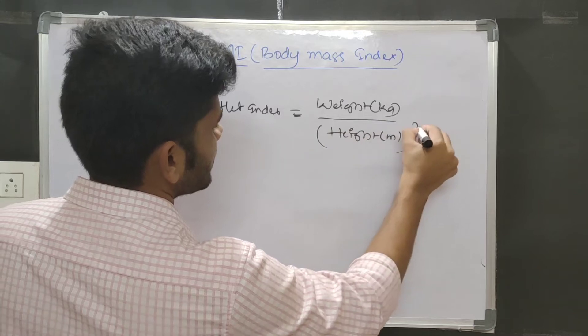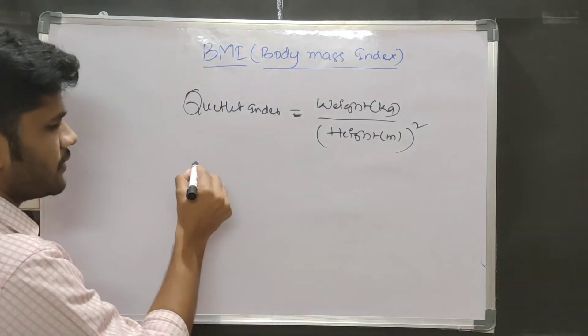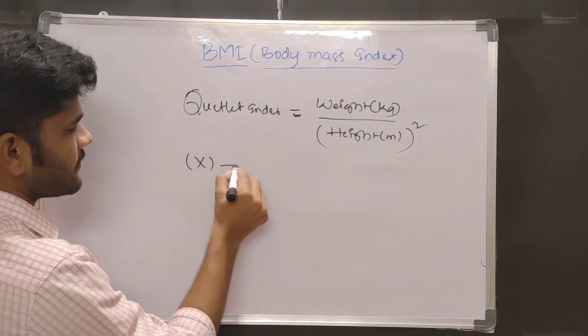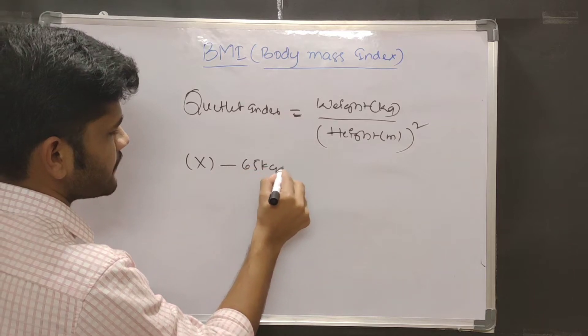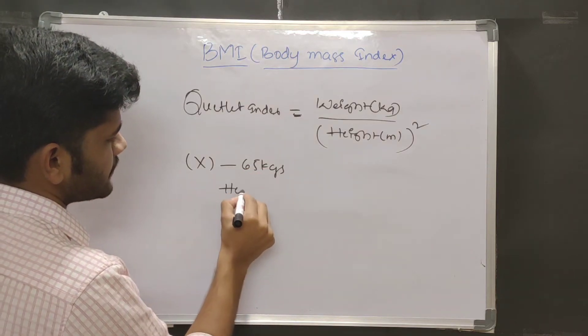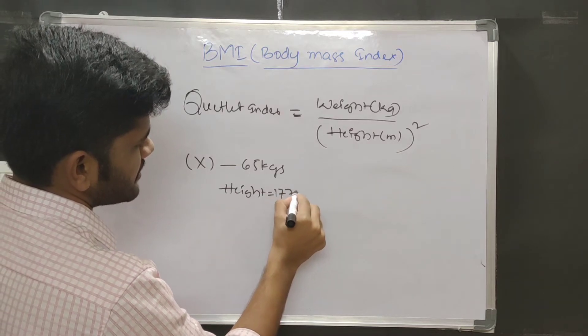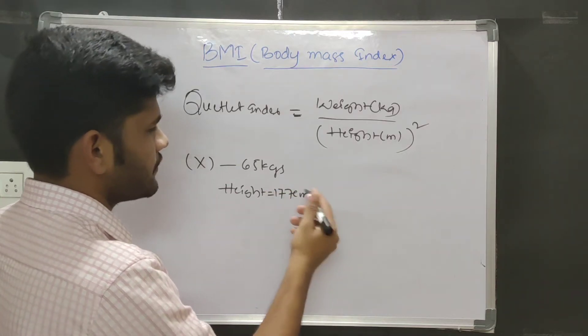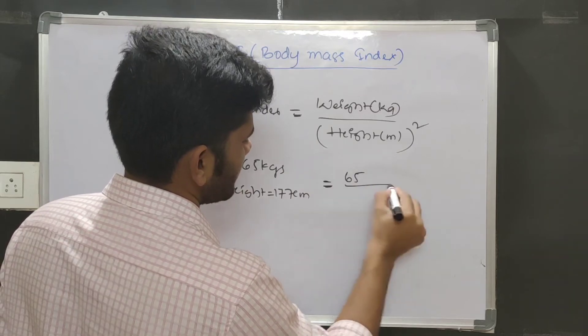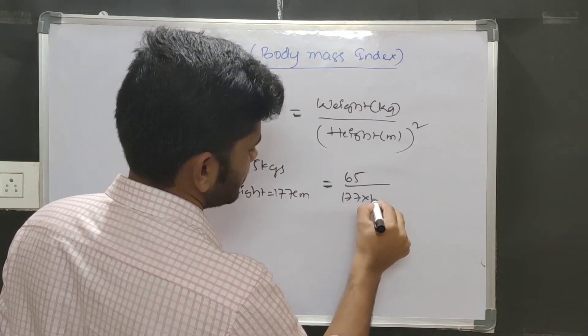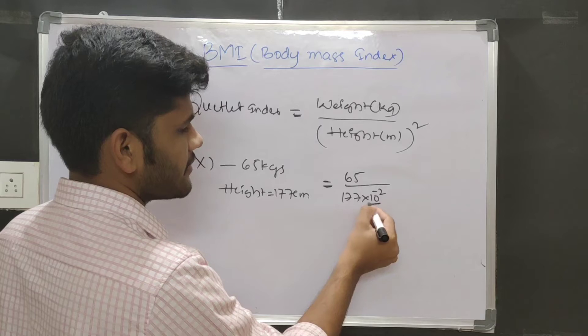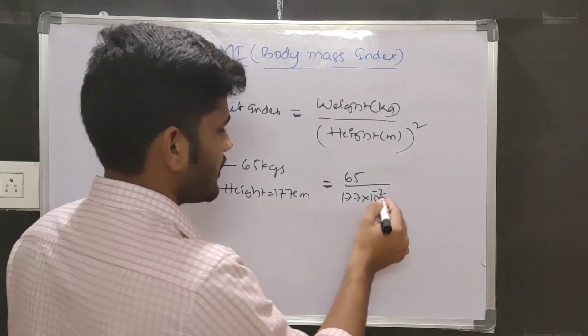So for example, a person has weight of 65 kgs and his height is 177 centimeters. So let's calculate: 65 by 177 into 10 power minus 2 to convert the centimeters into meters.